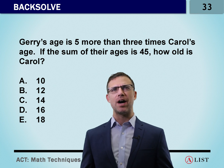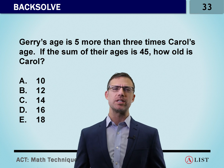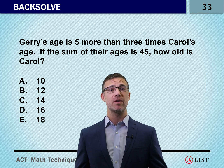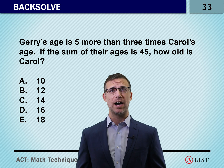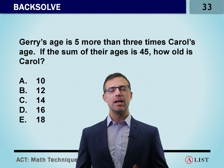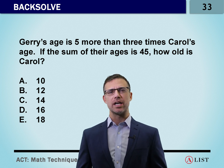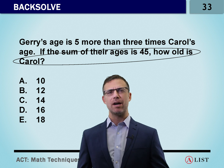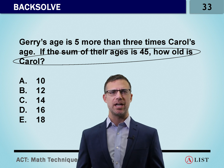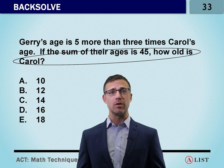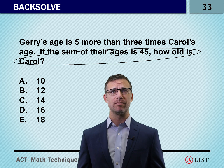Jerry's age is five more than three times Carol's age. If the sum of their ages is 45, how old is Carol? When we take a look at a question like this, notice that when we circle the end, they want to know Carol's specific age — not a relationship between unknowns, but specifically the value of Carol.